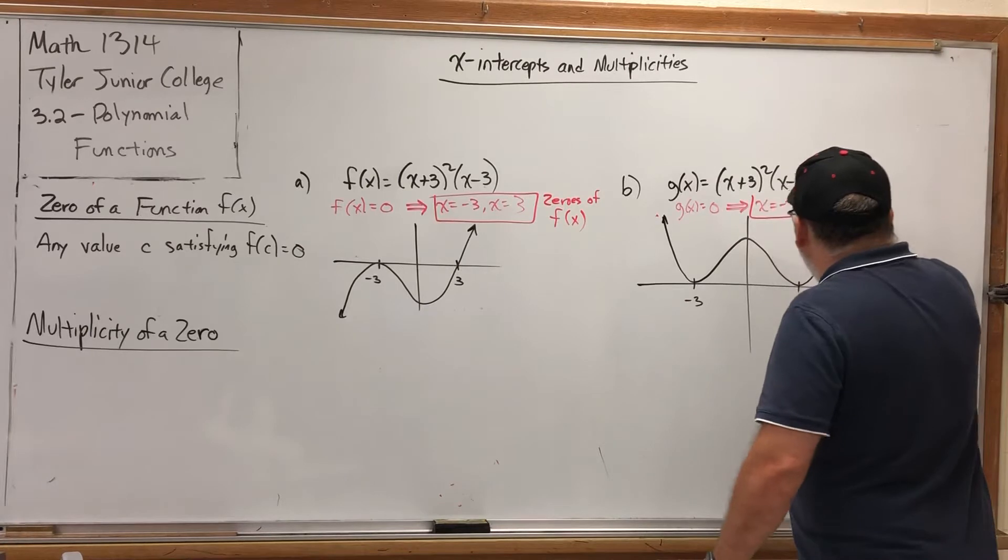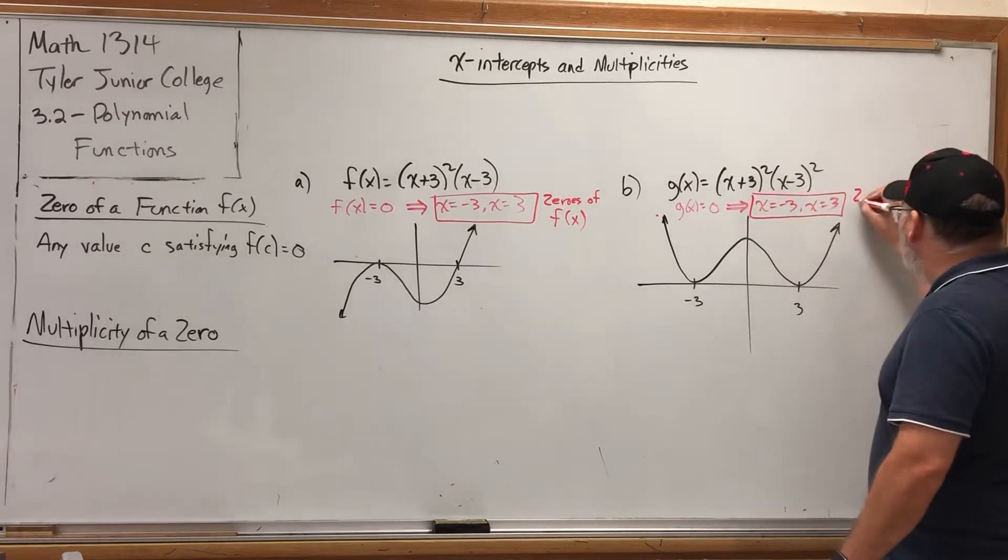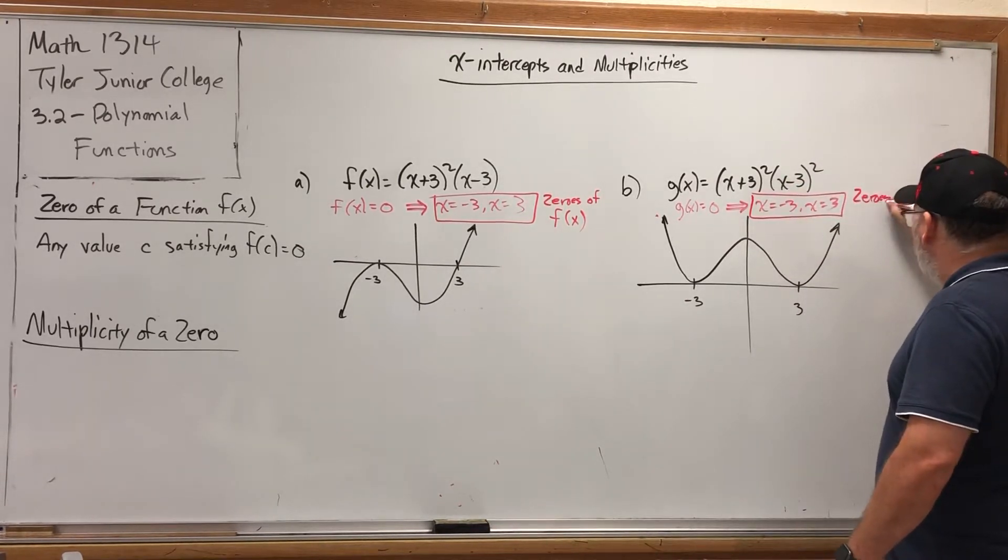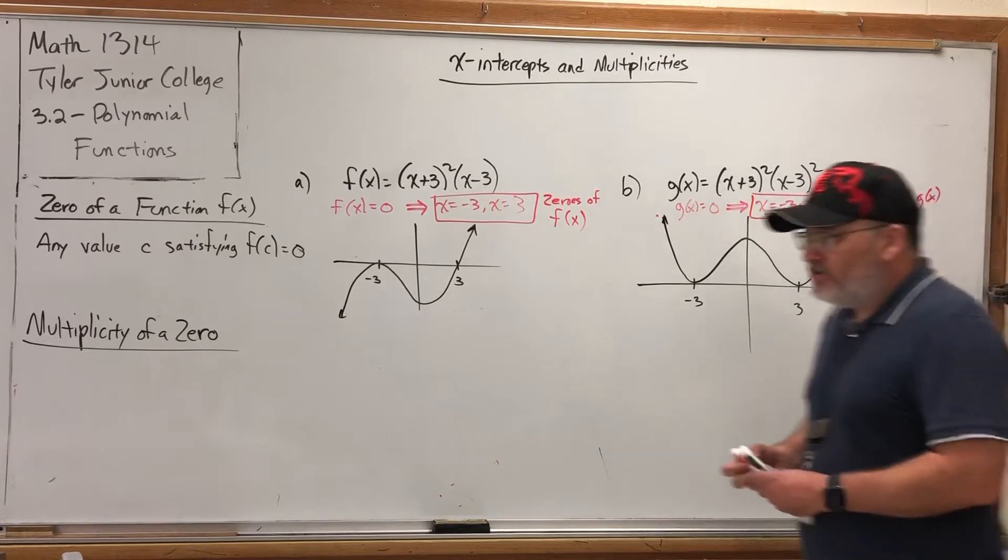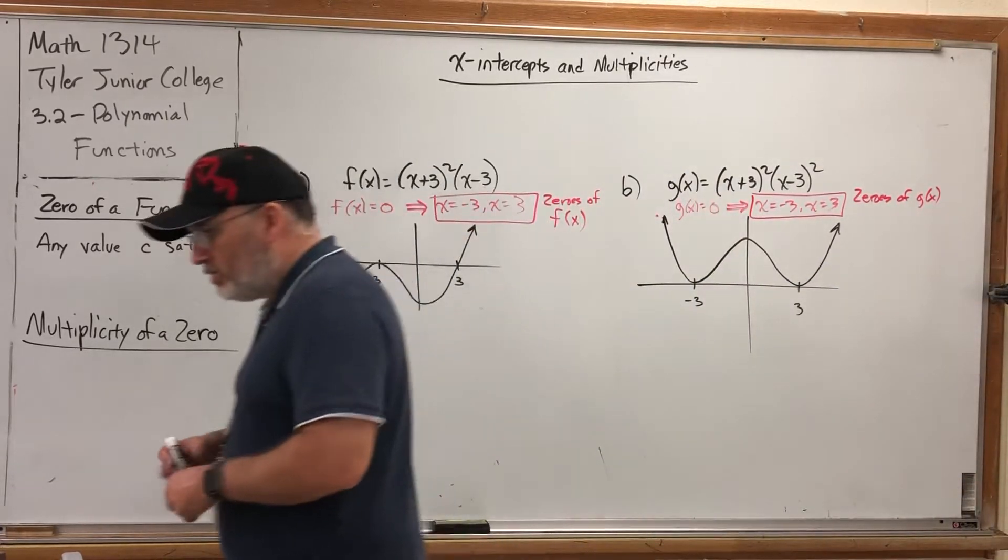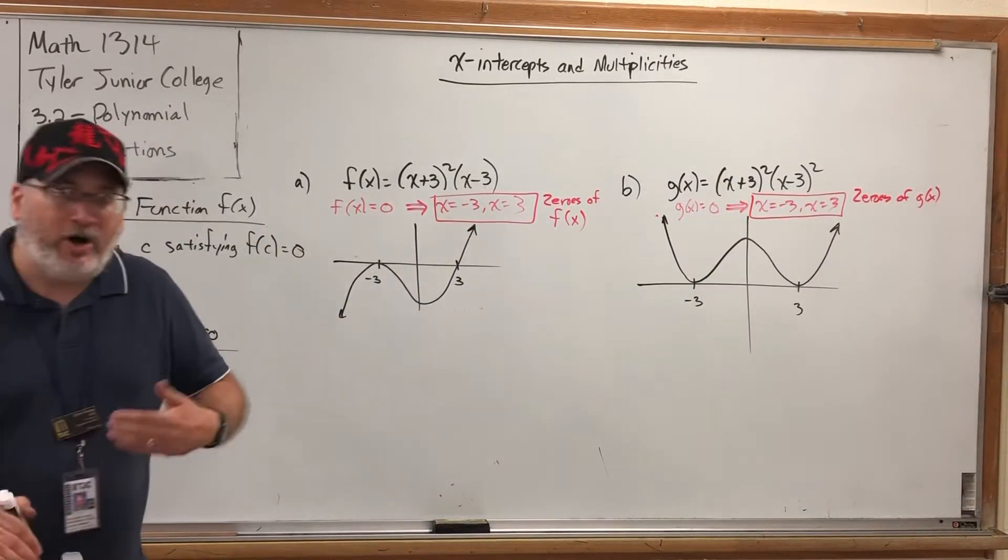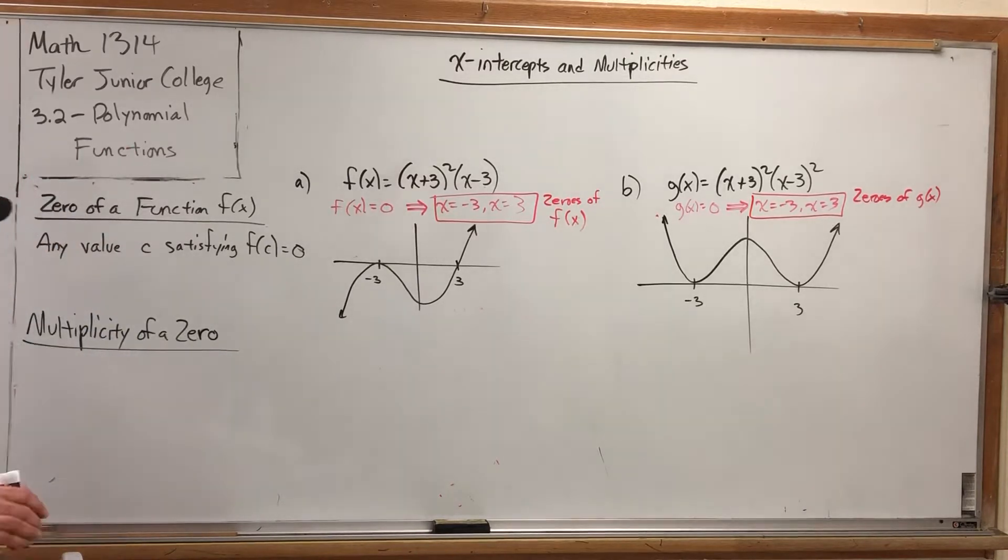Similarly, for G of X, the zeros were also, the zeros of G of X were also negative three and three, because if I substitute either into G of X, I get zero. So again, a zero of a function is any input that causes an output of zero.